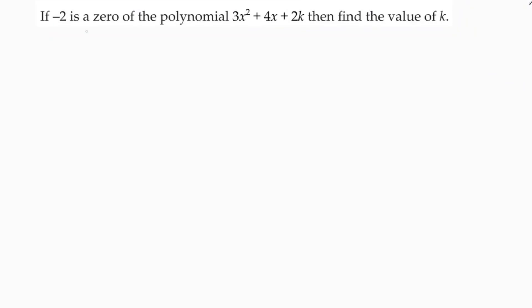If minus 2 is a zero of the polynomial 3x squared plus 4x plus 2k, then find the value of k.